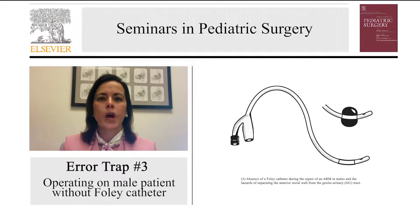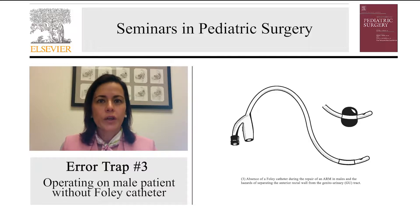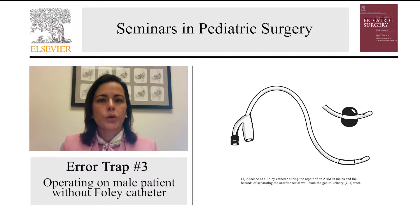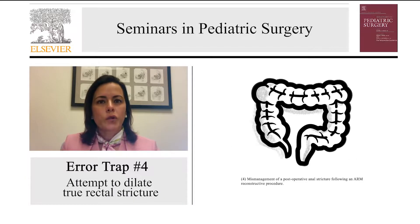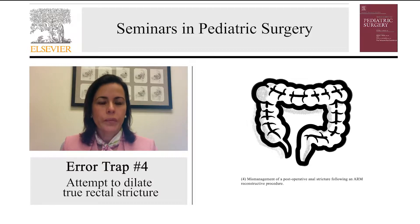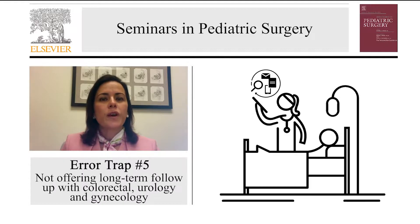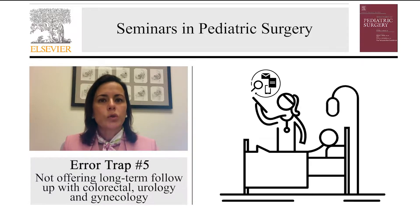The third error trap is operating on a male patient without a Foley catheter and ignoring the hazards of the separation between the anterior rectal wall and the genitourinary tract. The fourth error trap is attempting to dilate a true rectal stricture — anal dilations are not for real strictures. And the fifth error trap is not offering long-term follow-up to these patients. Those patients need long-term follow-up in colorectal, urology, and gynecology.